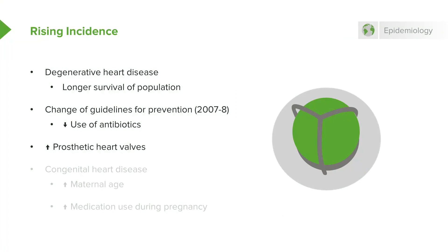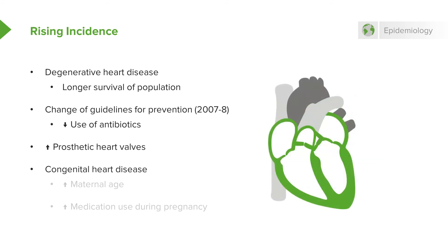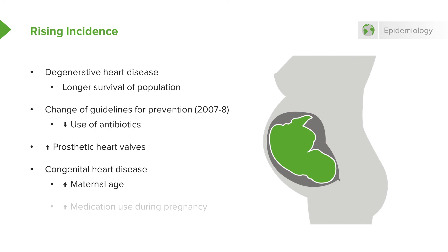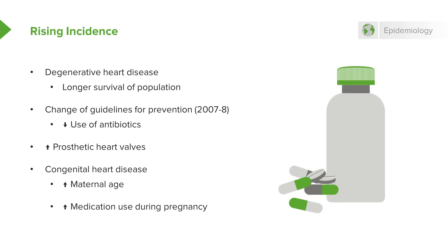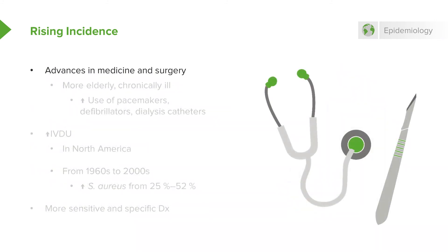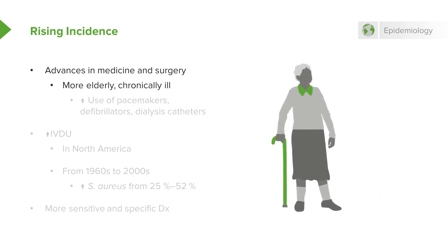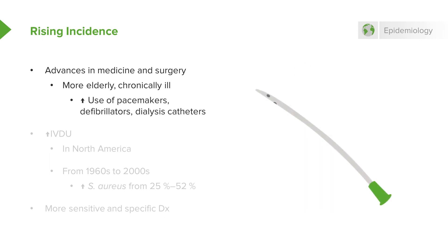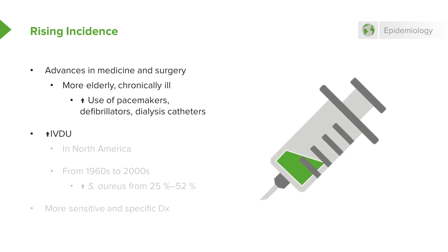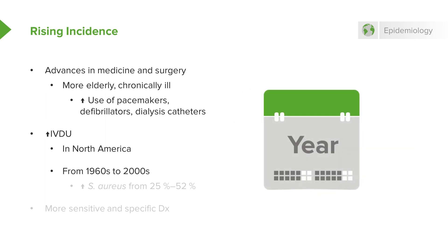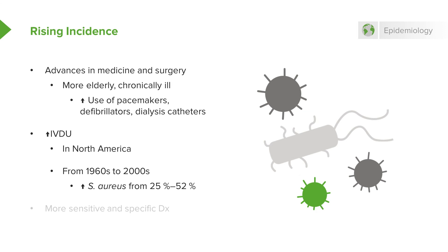We're putting prosthetic heart valves in people much more commonly. Congenital heart disease is also slightly on the increase because women are waiting longer to become pregnant, which brings an increased incidence of congenital heart disease, and medications used during pregnancy may also play a role. Advances in medicine and surgery — pacemakers, defibrillators, dialysis catheters — have sparked some of the increase. IV drug use in North America has driven staphylococcal endocarditis from about 25% to 52% between the 1960s and the 2000s.